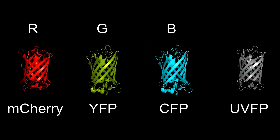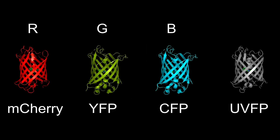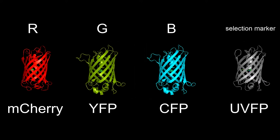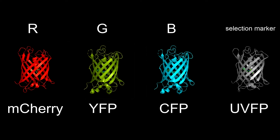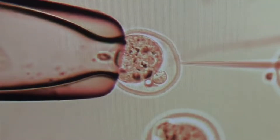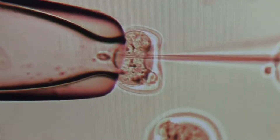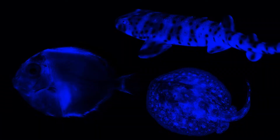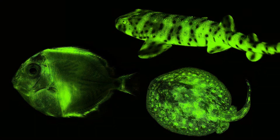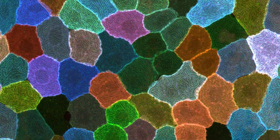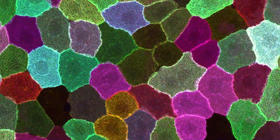The ultraviolet light produced by this protein cannot be observed by the human eye, but can be detected by machines. The purpose of this protein is as a selective marker. By inserting a combination of genes for mCherry, yellow fluorescent protein, and cyan fluorescent protein, a wide variety of colors can be achieved. However, the fluorescent proteins alone are not sufficient to make each individual cell fluoresce a different color. To achieve this, LoxP sequences have to be used.